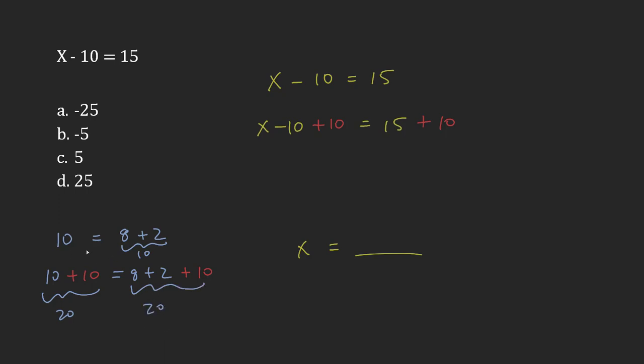This now would equal 20. So if you want to maintain the same relationship, 10 equals 8 plus 2, which is just 10. Now if I add 10, 20 equals 8 plus 2 plus 10, which is also 20.